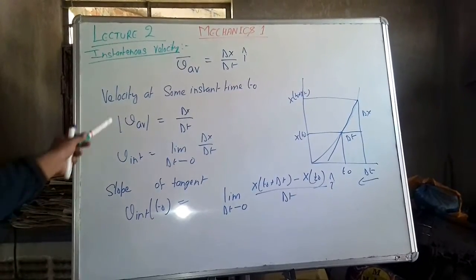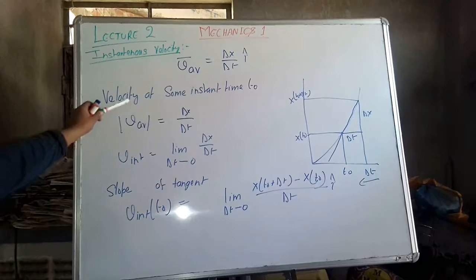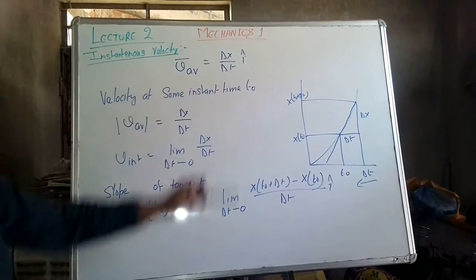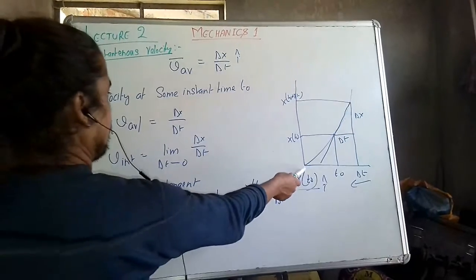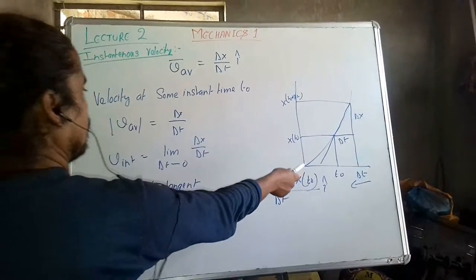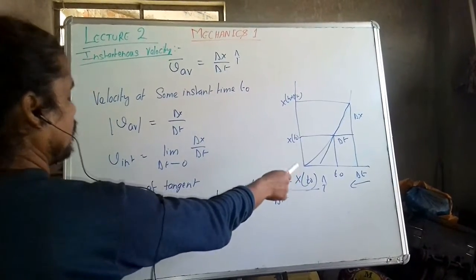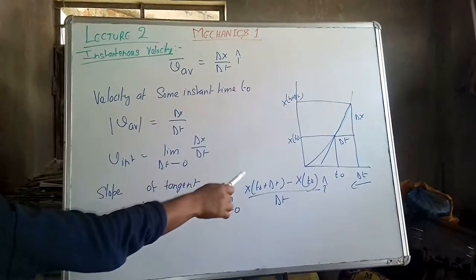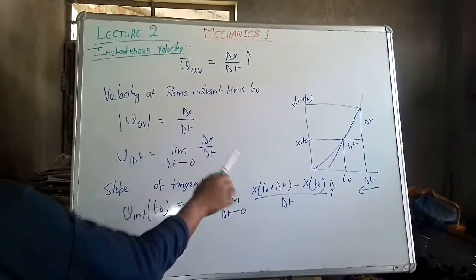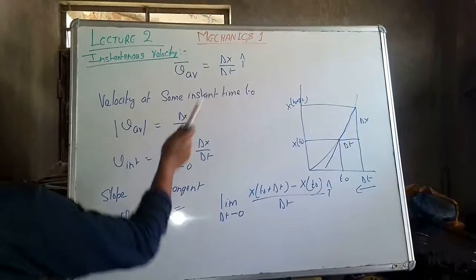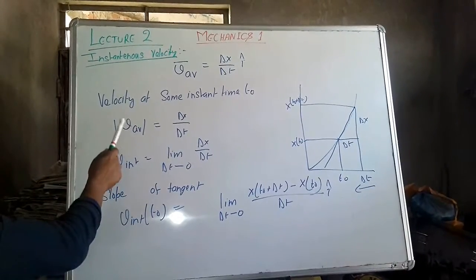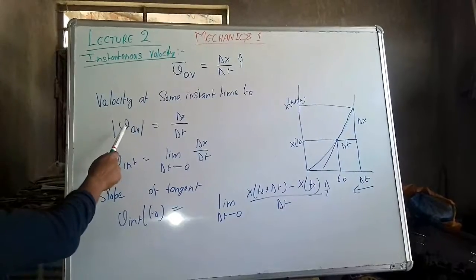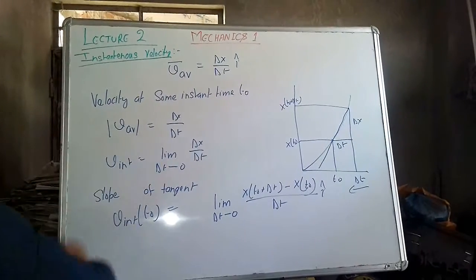Now, here is the definition of instantaneous velocity. Velocity at some instant time t naught. This is the graph for a particle which is travelling at some velocity v, and we have to derive instantaneous velocity, velocity at time t naught. As I derived the formula of v average delta x by delta t.